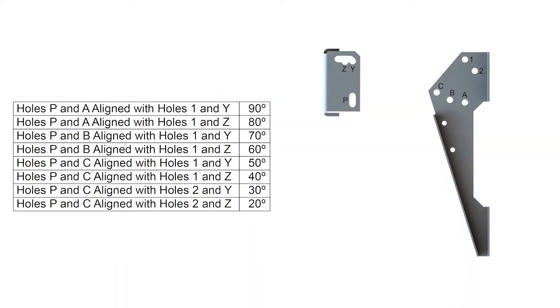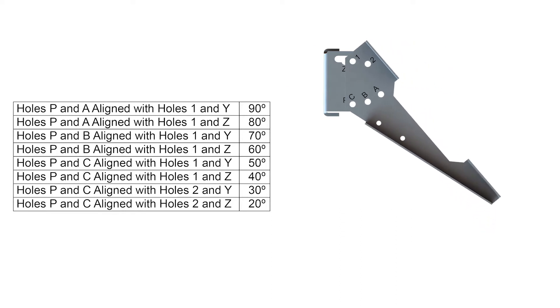Using the chart in the manual, determine which mounting holes are needed to set the correct angle for the solar panel. In this example, aligning holes P and C, and holes 1 and Y, will set the solar panel to 50 degrees.